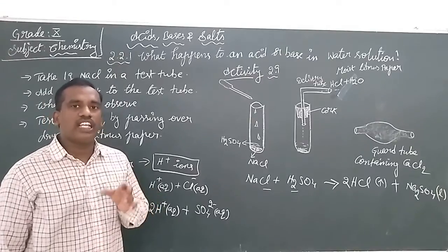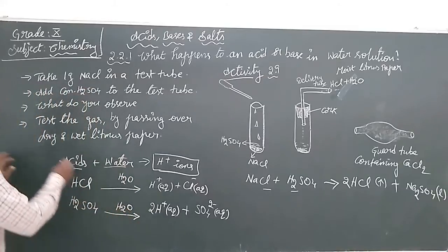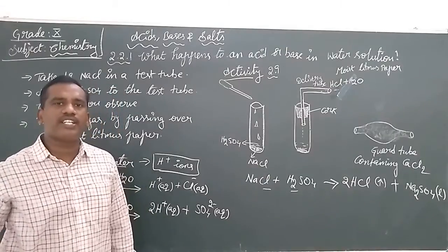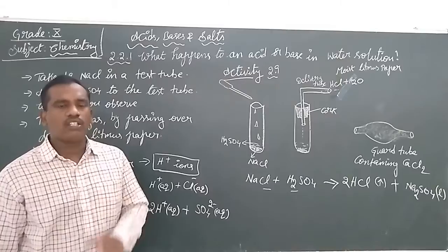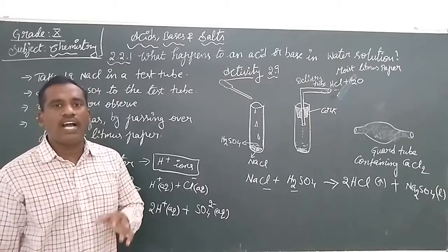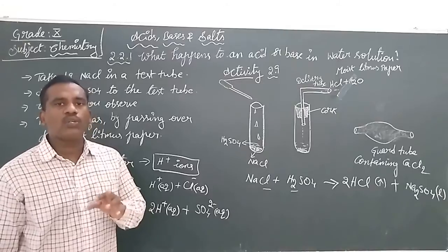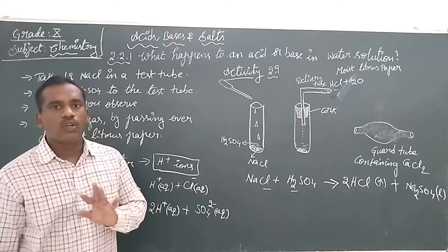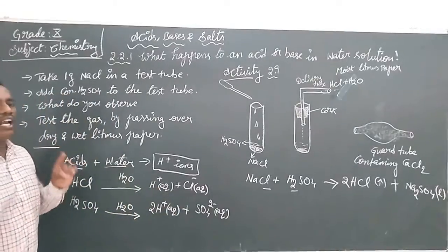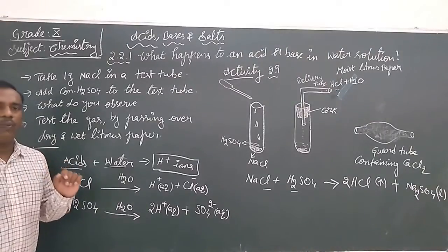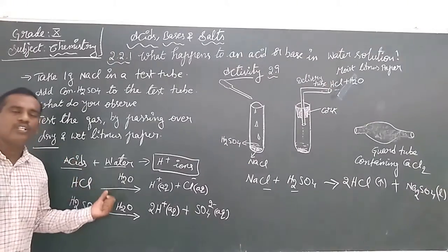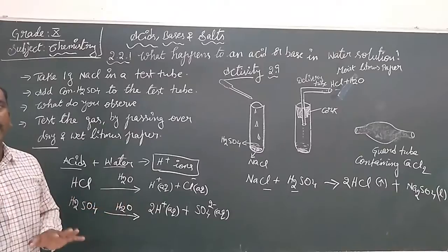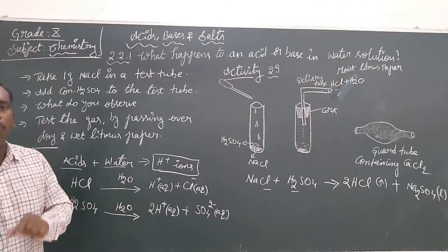But if you try the same experiment with a dry litmus paper, can you observe the dry litmus paper changing to red color? No, you will not observe that. Because the acidic particles are not going to dissociate due to the absence of water. So the color of litmus paper changes only when it is in the wet condition due to the presence of water molecules. If it is dry litmus paper, there is no change in color due to the absence of water molecules.